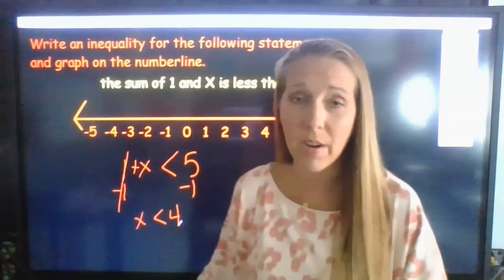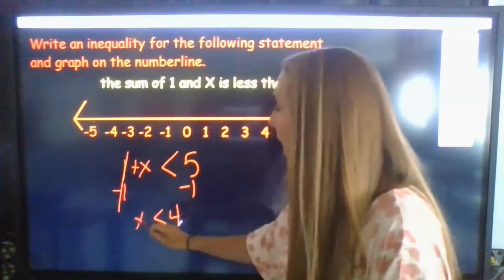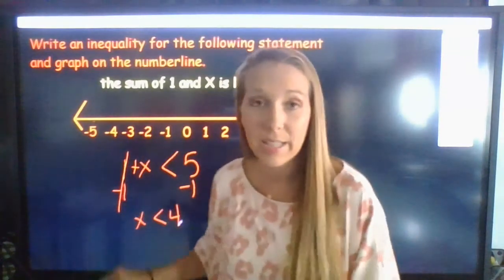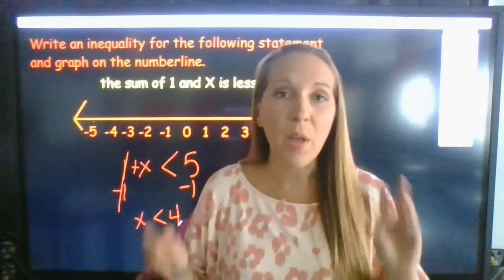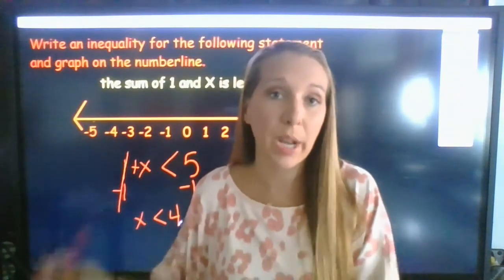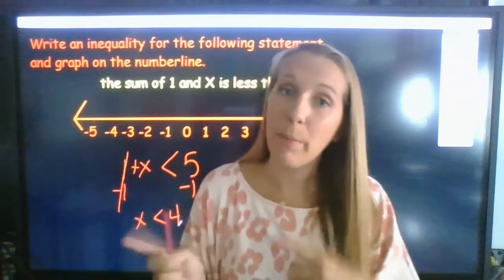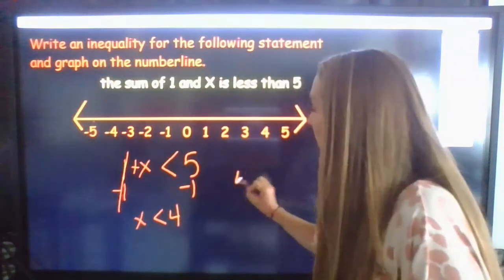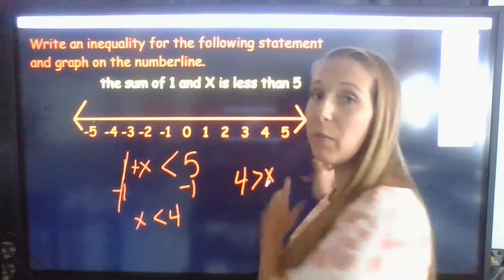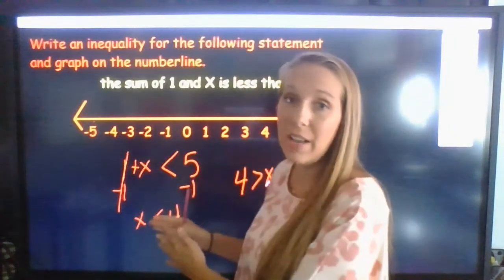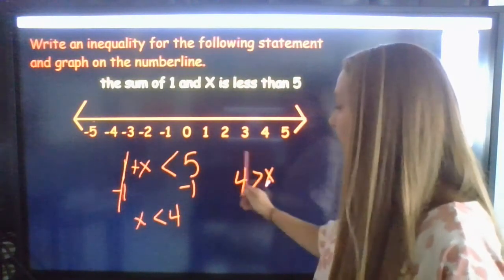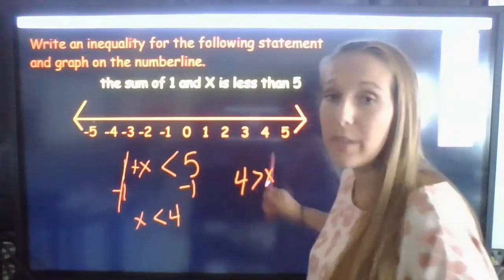All right, so now here's the trick. You can read this x is less than 4. You could also read this 4 is greater than x. Now we can use what we call the arrow rule, but we can only use the arrow rule if the variable is on the left. So just know that you can move it back and forth. If we ended up with the problem 4 is greater than x, you could always read it from backward, from the right to left, and it still means the same thing. But if you read it this way, make sure you say x is less than 4, and 4 is greater than x.